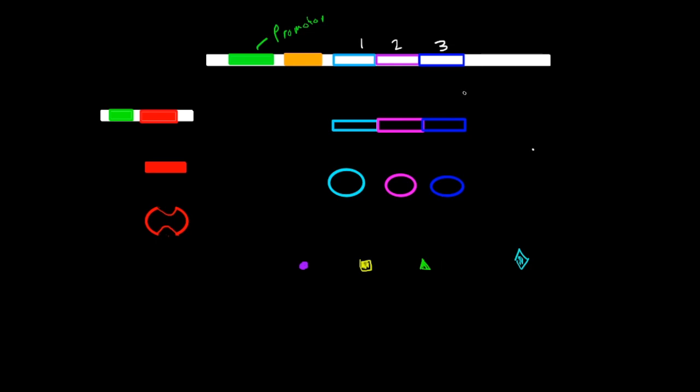So the operon regulates the expression of structural genes by controlling the transcription, which in bacteria is usually the most important level of gene regulation. So right here, I've drawn a basic operon structure. So right here, we have the promoter, and then you'd actually have a little bit of overlap between the promoter. So let's just draw right here.